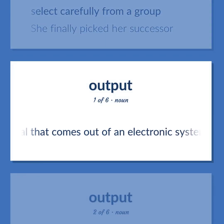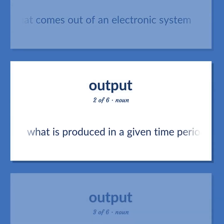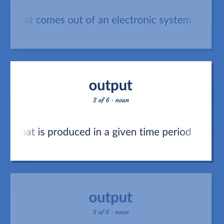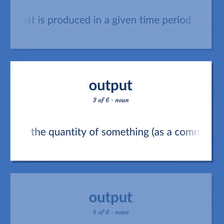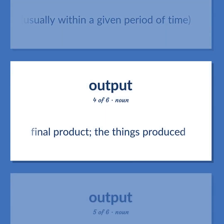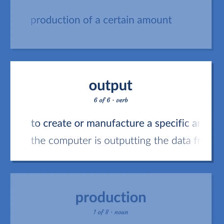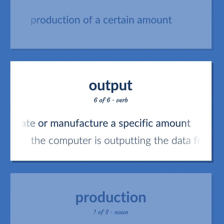Output: a signal that comes out of an electronic system. Also, what is produced in a given time period — the quantity of something, as a commodity, that is created, usually within a given period of time. Also, final product — the things produced. Production of a certain amount; to create or manufacture a specific amount — 'The computer is outputting the data from the job I'm running.'